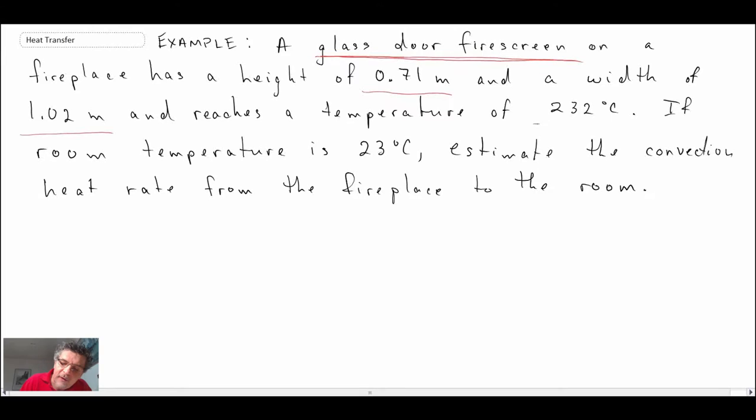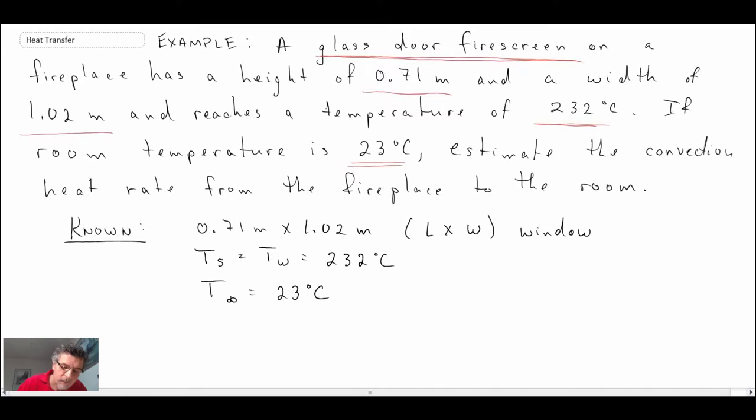We're told that it gets up to 232 degrees C, so it's very hot. And the room temperature, the ambient room temperature is 23 degrees C, and then we're told to estimate the convection heat transfer from the fireplace to the room. And so, let's begin by going through the process of writing out what we know and what we're looking for. So that's what we know, and what we're trying to find is Q due to convective heat transfer.